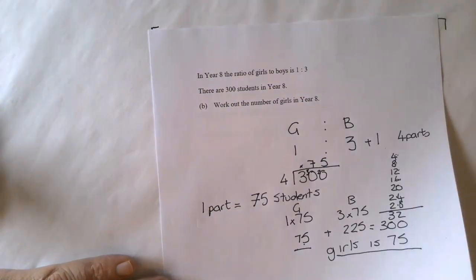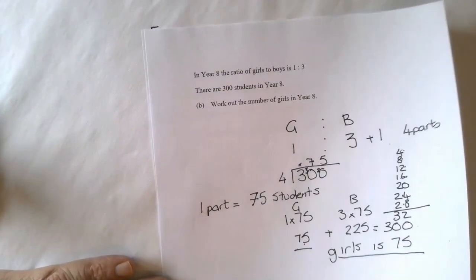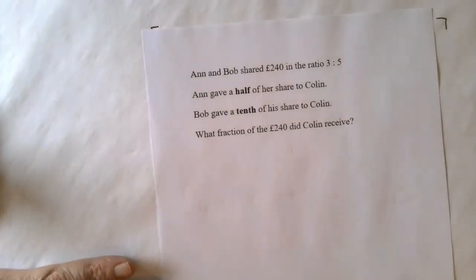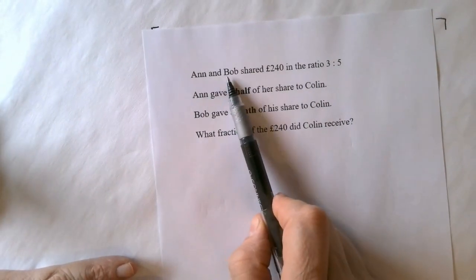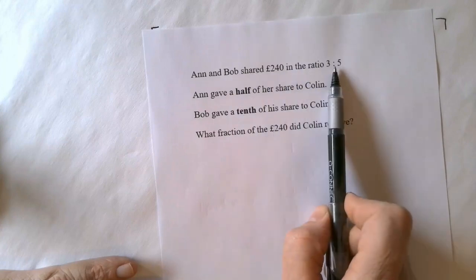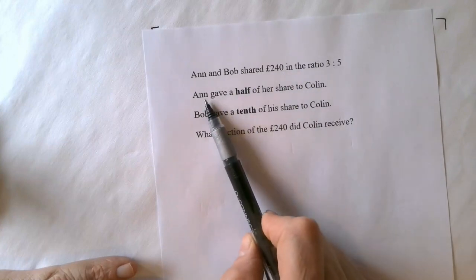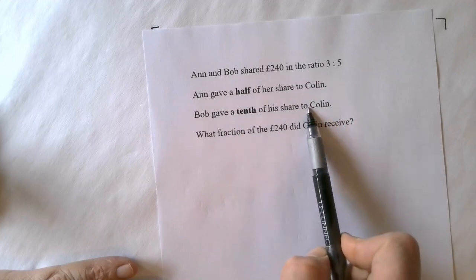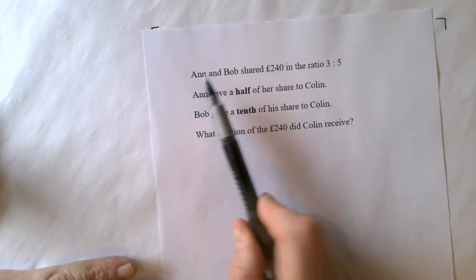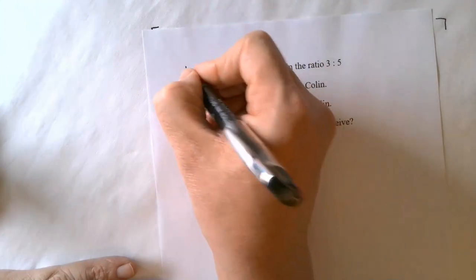This last question we're going to try together is a bit more difficult but if you get your hands around it and think about it clearly it's quite easy. This is more than one part question. The first part starts with Ann and Bob shared money in a ratio of 3 to 5. But then after that Ann's going to give some money to Colin and Bob's going to give some money to Colin as well.